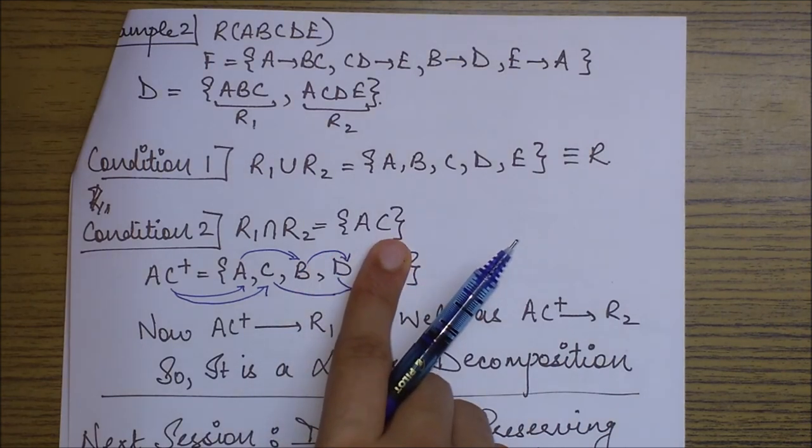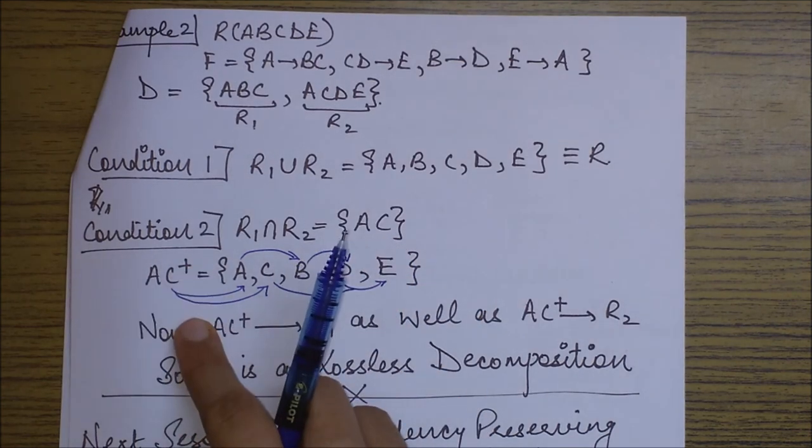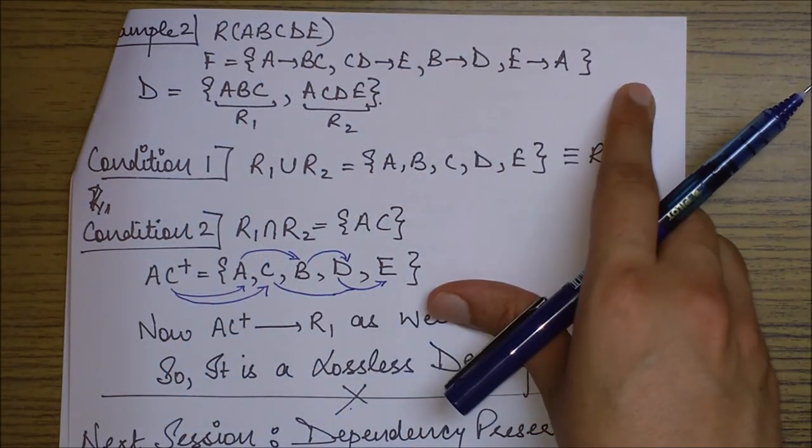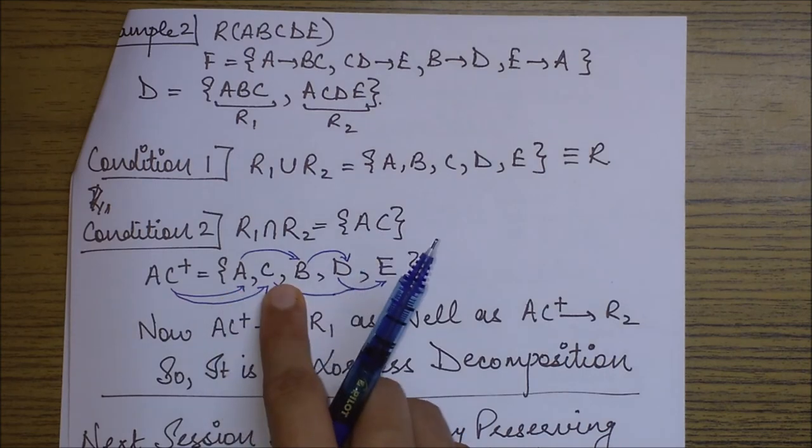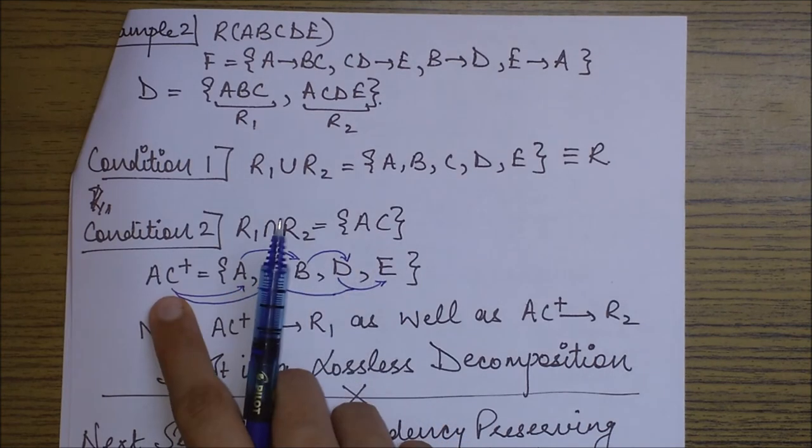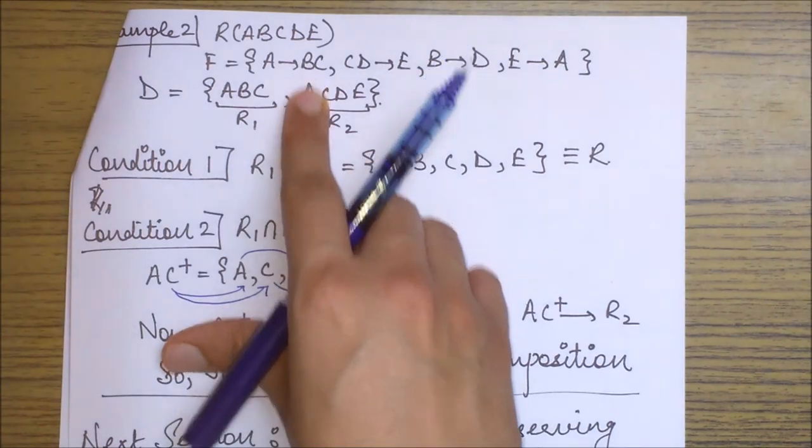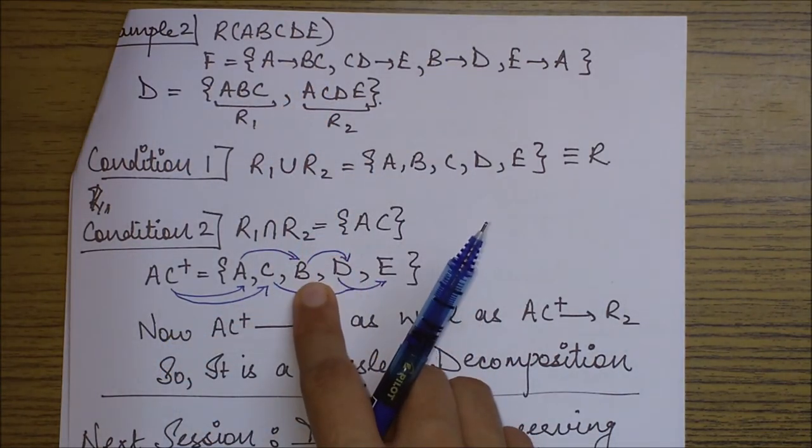Next would be finding AC closure. AC closure we will find using this functional dependency set. Let's find AC closure. From AC, I will be able to reach A and C, definitely. From A, I am also able to reach this B. So B gets added into this set.